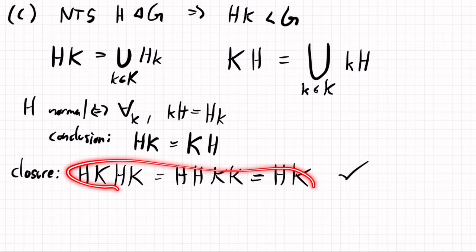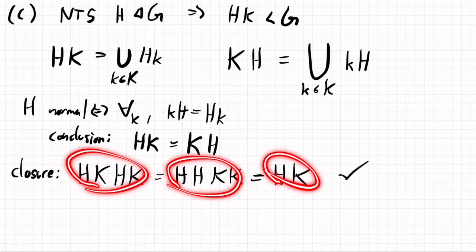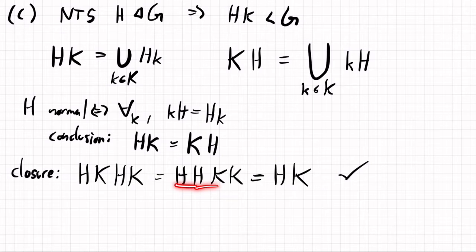And of course, we could write this out in terms of elements, we'd just be unpacking the definitions of each of these in terms of the products of sets, but maybe I won't write that out. Now, we've shown closure, now we need to show inverses.